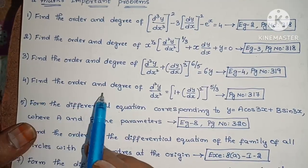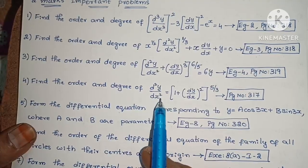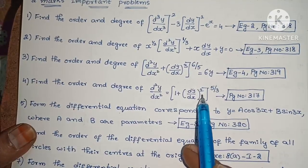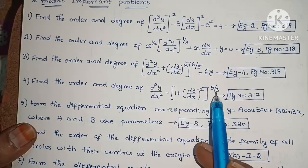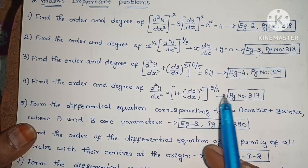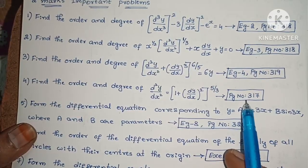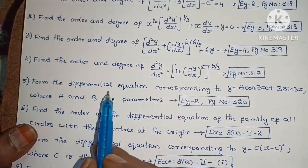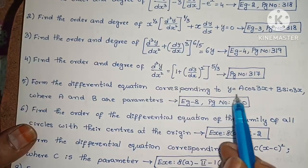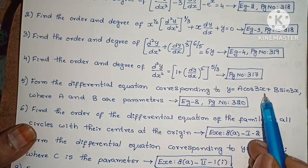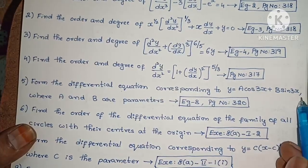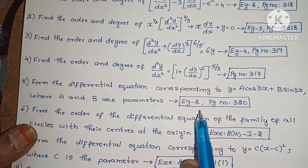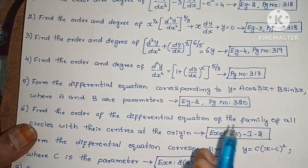Next, find the order and degree of d²y/dx² equals (1 + (dy/dx)²)^(5/3). Page number 317, example problem. Next, form the differential equation corresponding to y equals a·cos(3x) plus b·sin(3x), where a and b are parameters. Example 8, page number 320.